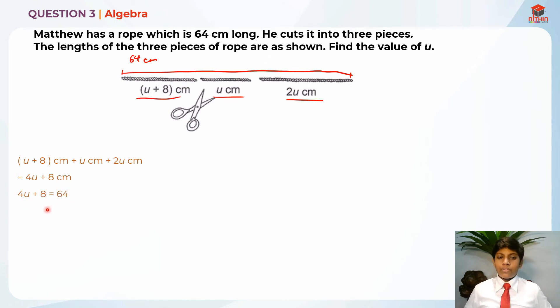In order to solve for 4 units, this 8 has a positive sign over here, which is a plus. So when I bring it over the equal sign, it will become a minus. So it will become 4 units is equal to 64 minus 8, which will give us 56.